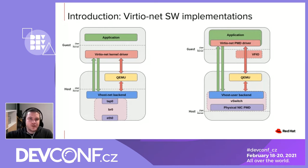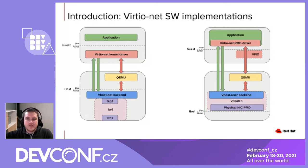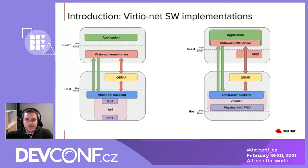Both solutions have their pros and cons. The kernel solution is the default and more generic one, whilst the user space solution is more specialized for use cases requiring high throughput and low latencies — this is commonly used in NFV. But in any case, while these software solutions have advantages by providing standardized interfaces and features like migration, they have a cost in terms of resource utilization by the vhost backend, leaving fewer resources to the end application.